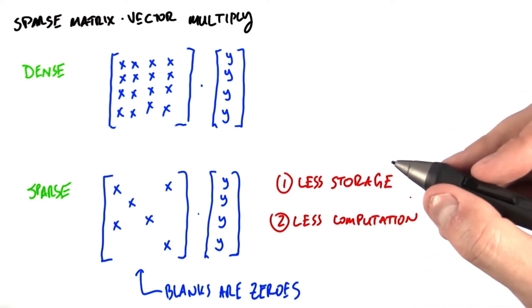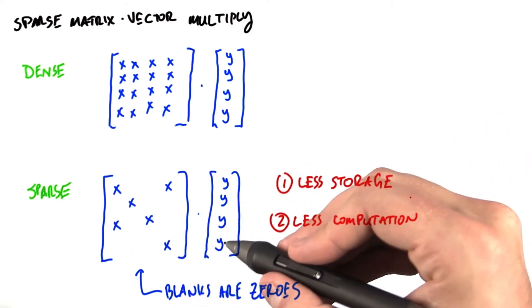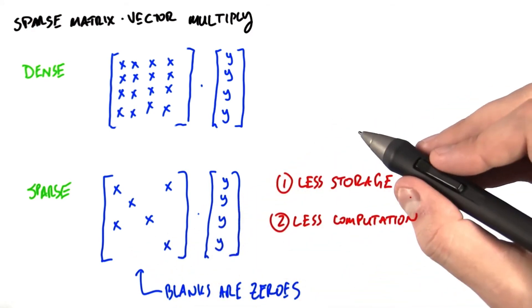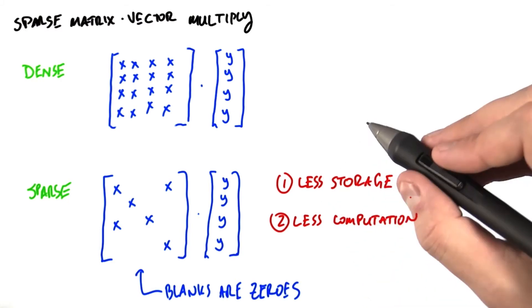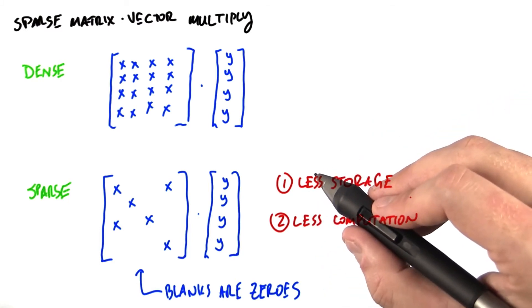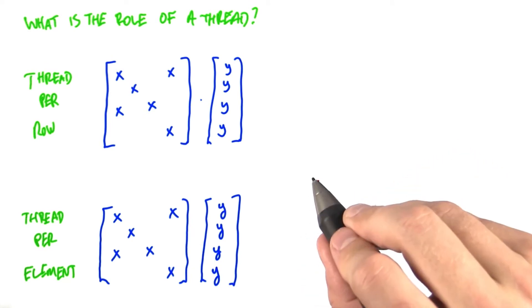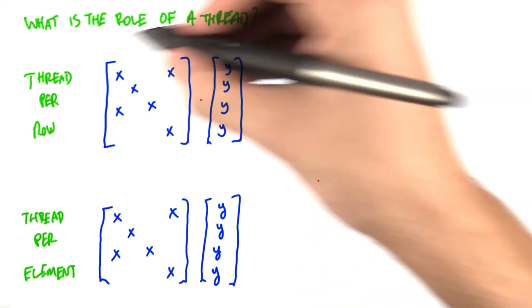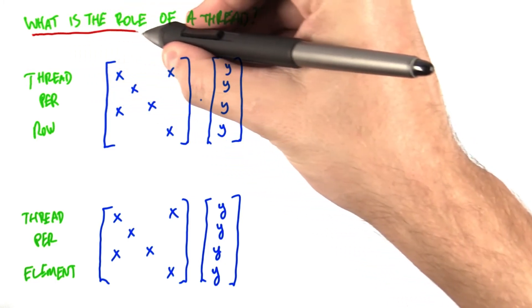If you need a refresher on how to multiply a sparse matrix by a dense vector, please take a short trip back to unit 4, because what we're going to talk about today is a strategy to build a more efficient SPMV. The broad question that we want to answer in thinking about how to map this problem efficiently is, what is the role of a thread?